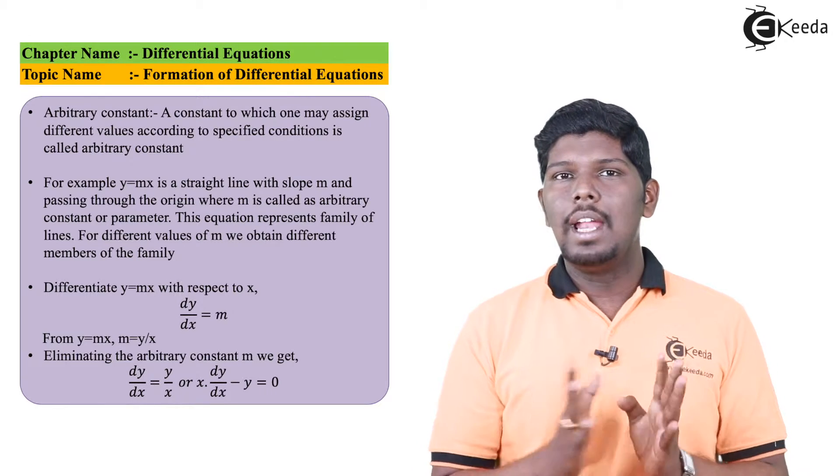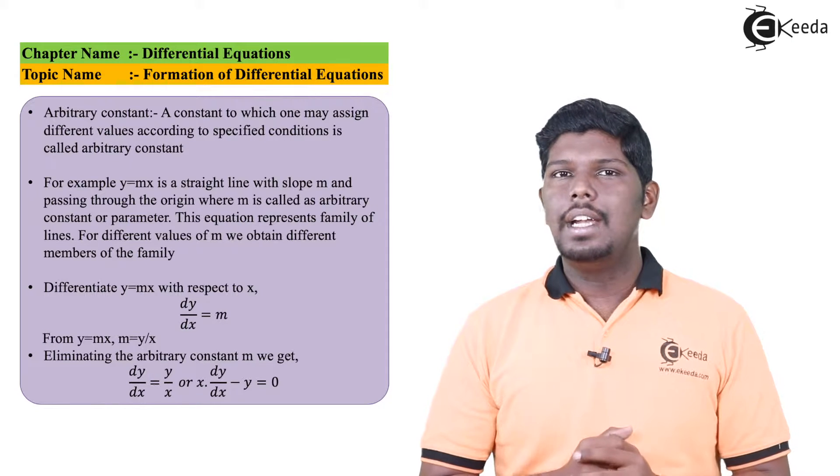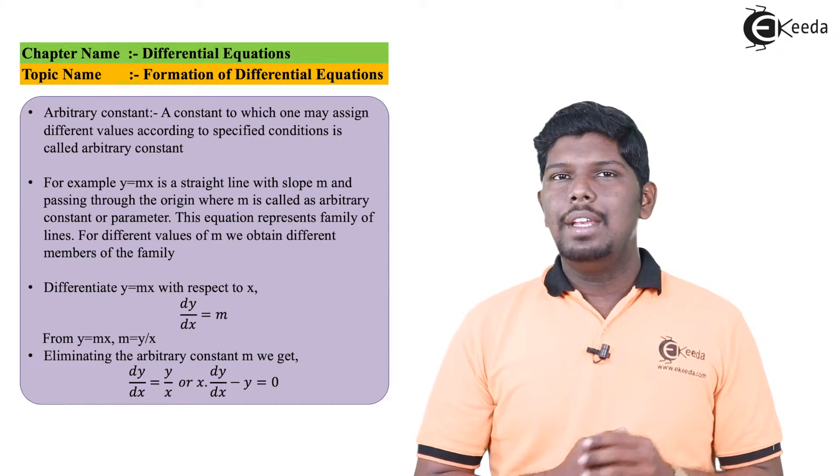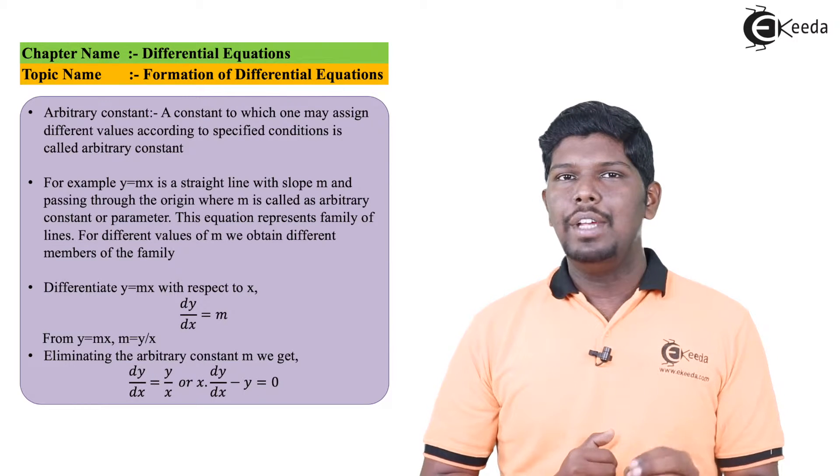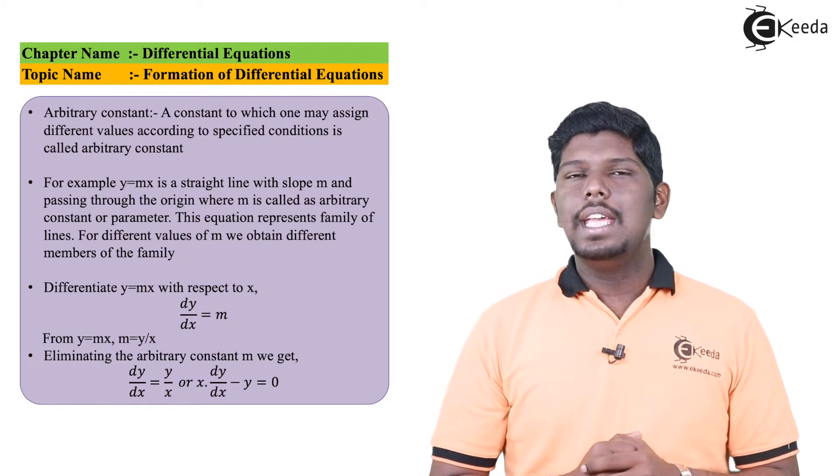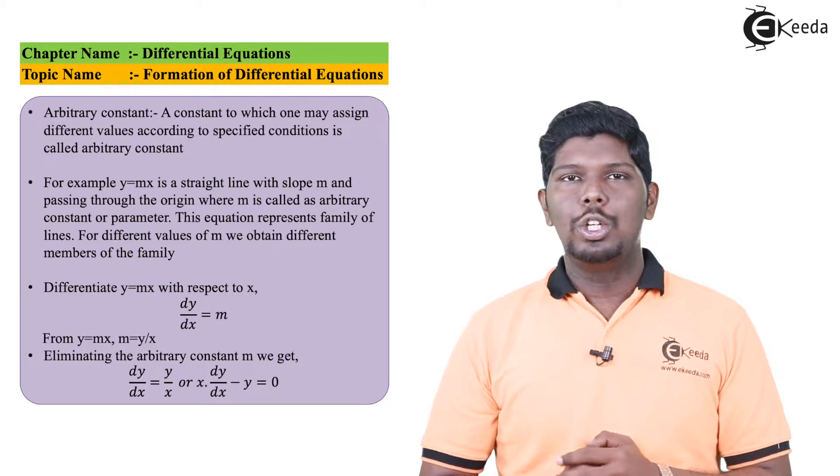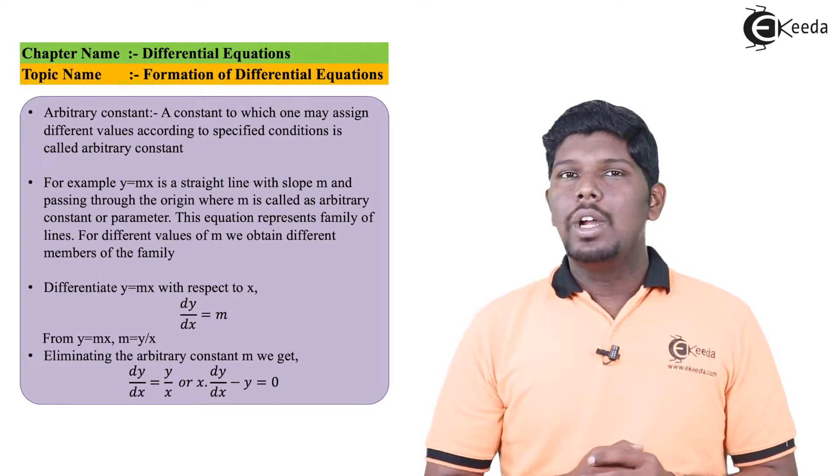Let us understand this by a particular example. Suppose we have a line y equals mx, which is a straight line passing through the origin and having a slope m. In this case, m is called an arbitrary constant or also called a parameter.